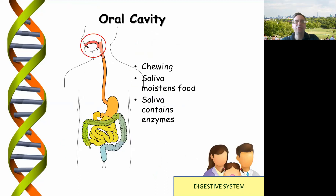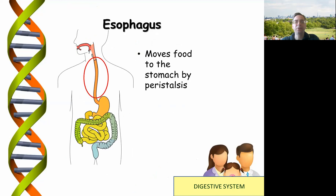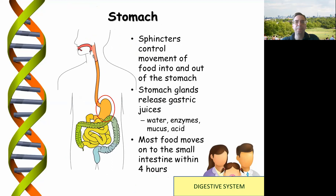The function of each: chewing — mechanical mastication — and the saliva contains enzymes which break down food products. The esophagus moves food by the process called peristalsis, which is contraction and relaxation of muscle. The stomach controls movement of food into and out of it, releasing gastric juices at a very low pH containing water, enzymes, mucus and hydrochloric acid.